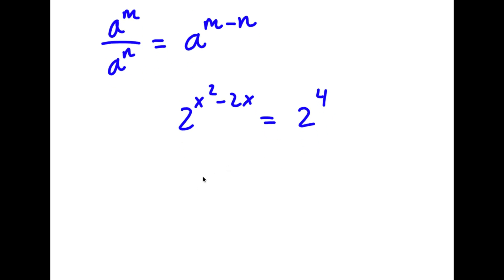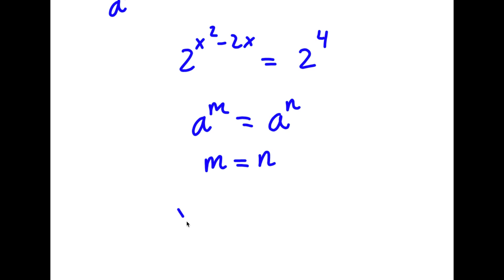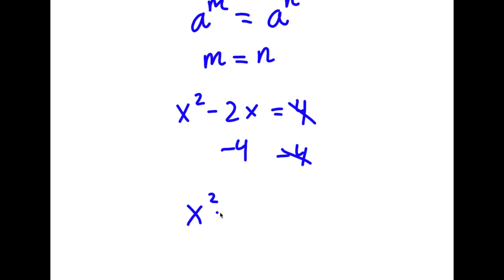If I have something in the form a to the power of m is equal to a to the power of n, this means that m is equal to n. So in this case, x squared minus 2x is equal to 4. Now if I subtract 4 on both sides, I get x squared minus 2x minus 4 is equal to 0.